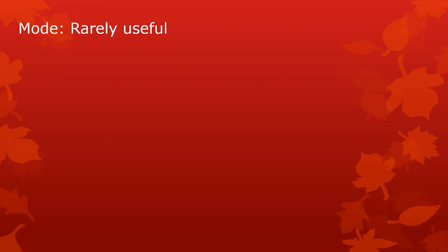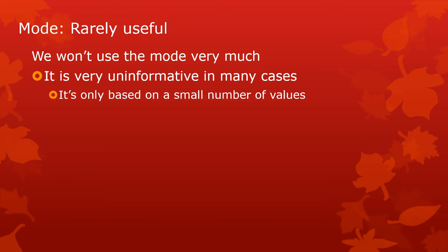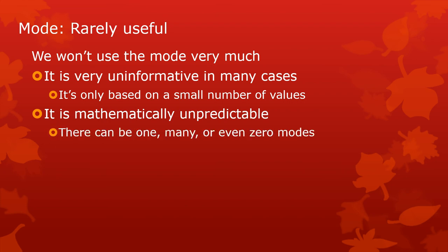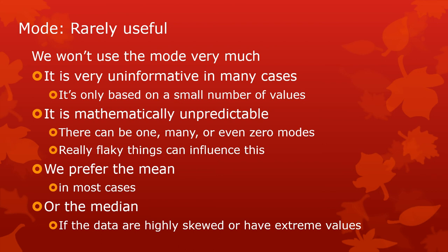The mode can be useful sometimes, but not that much — we're not going to use it much. It doesn't tell us very much; it's based on only a very small number of values. It's mathematically pretty unpredictable — you can have lots of modes or zero modes, and really flaky things can influence what your mode is. We tend to prefer the mean, which is much nicer for us. And if we can't use the mean, we prefer the median — for instance, if the data are highly skewed or have some extreme values.